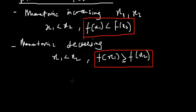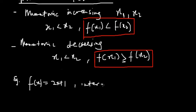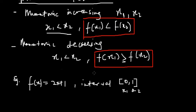Let's take an example. Say you are given the function f(x) = 2x + 1 and the interval [0, 1]. We want to find whether this function is monotonic increasing or decreasing. Notice that 0 is x1 and 1 is x2. From the interval alone you could see it looks like monotonic increasing — let's verify by solving it.